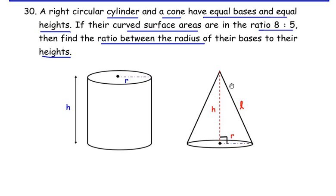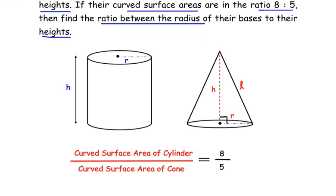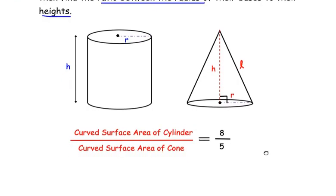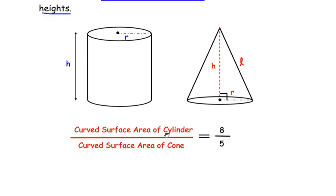According to the given information, the curved surface areas of the cylinder and the cone are in the ratio 8:5. Since it is a ratio, we write: curved surface area of cylinder over curved surface area of cone = 8/5.